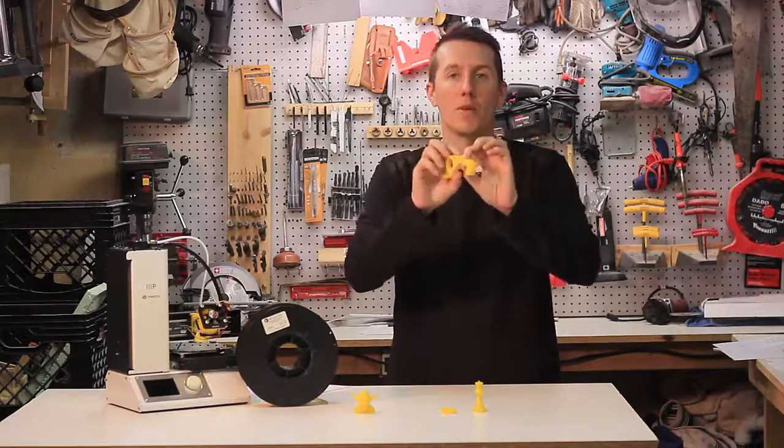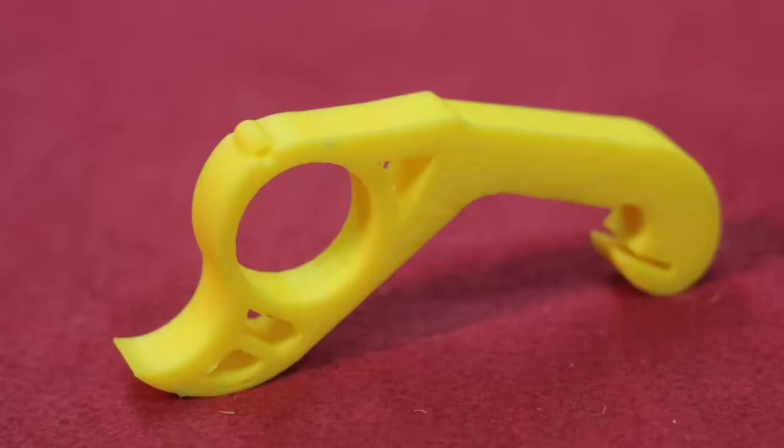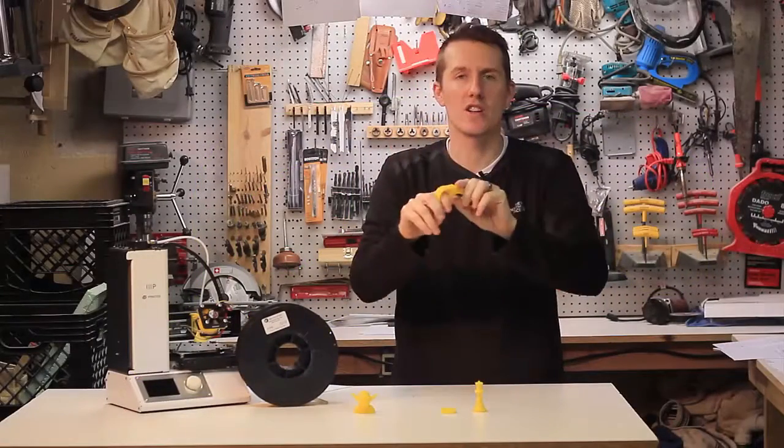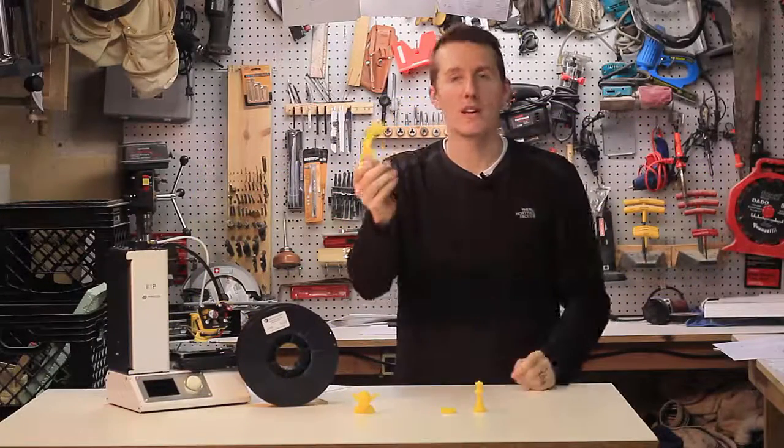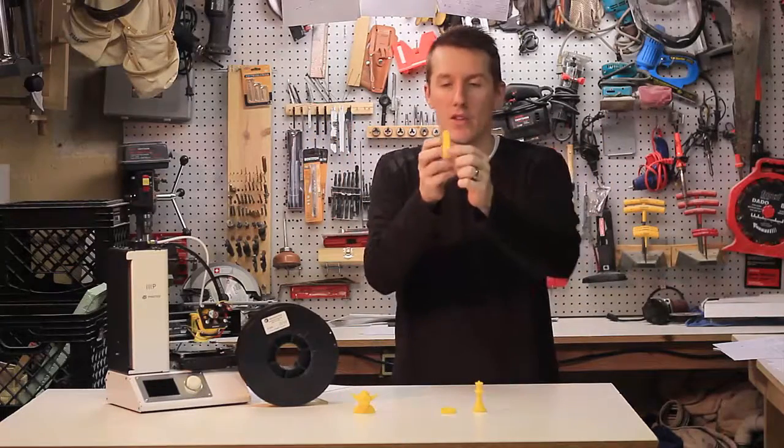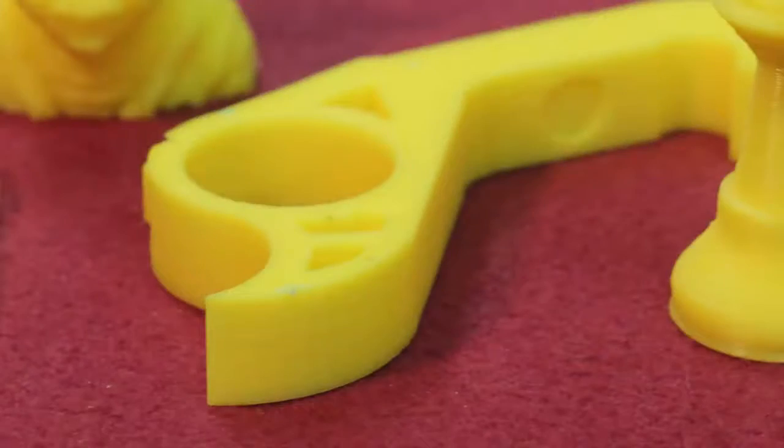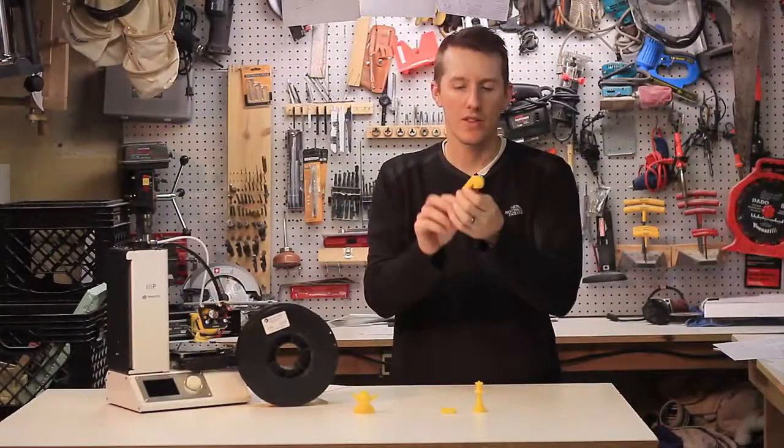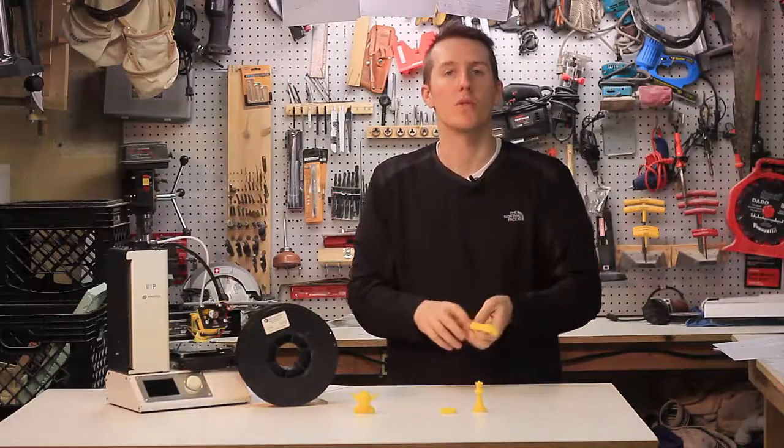With the bottle opener, again, 0.3 millimeter height. You can barely see these lines. It looks really great. It's really firm and rigid and strong. It's brittle like a PLA, but that's the characteristic of a PLA. But the look and finish of it, right off the print bed, this looks perfect. You don't have to sand it or anything. All these lines are super clean and smooth.